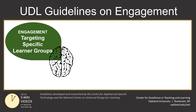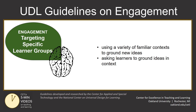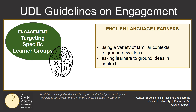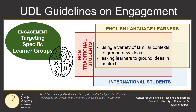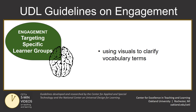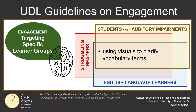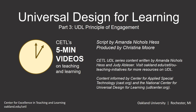If you're looking to target specific learner groups in your discipline, it's helpful to first identify who they are and what they need in terms of engagement. For example, using a variety of familiar contexts to ground new ideas, or asking learners themselves to ground these ideas in context, can help English language learners, international students, and non-traditional students make sense of disciplinary ideas. Or using visuals to clarify vocabulary terms can help to engage students with auditory impairments, English language learners, or struggling readers.